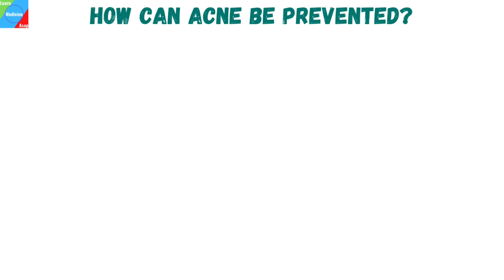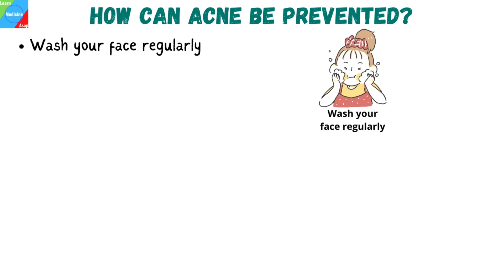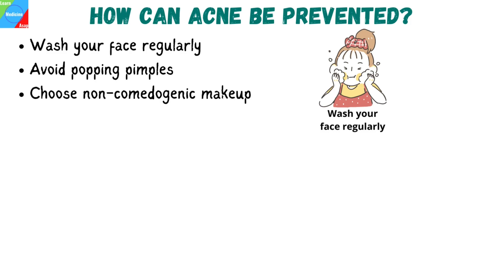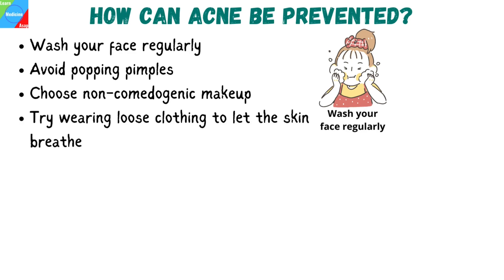How can acne be prevented? Here are some tips for looking after skin that has acne or is prone to it. Wash your face daily with warm water and a mild facial cleanser. Avoid popping pimples, as this makes scarring more likely. Choose non-comedogenic makeup for sensitive skin and avoid oil-based products. Remove makeup before sleeping. If acne is on the back, shoulders, or chest, try wearing loose clothing to let the skin breathe. Avoid tight garments such as headbands, caps, and scarves, or wash them regularly if used.